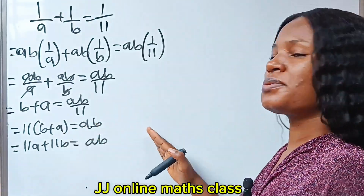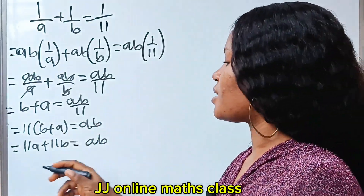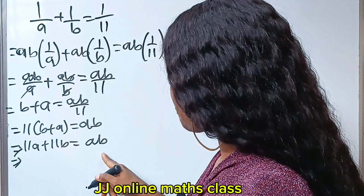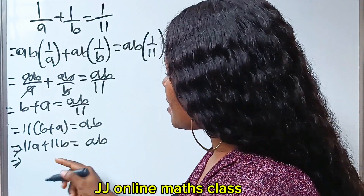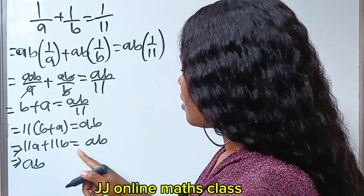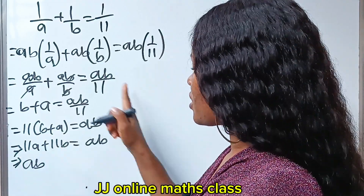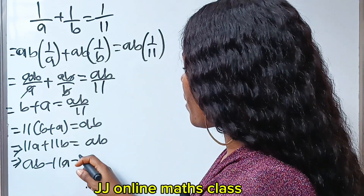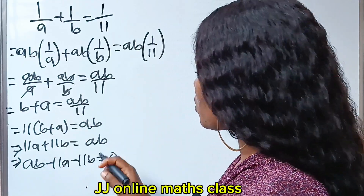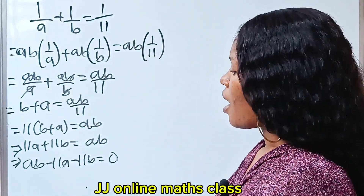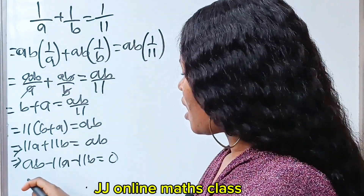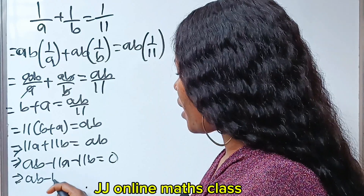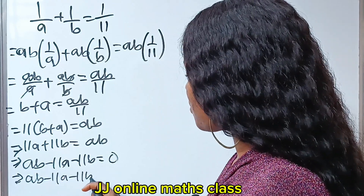Now let's transfer everything to one side. So we are going to have AB minus 11A minus 11B is equal to 0.